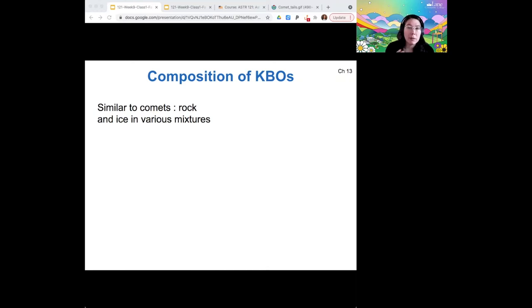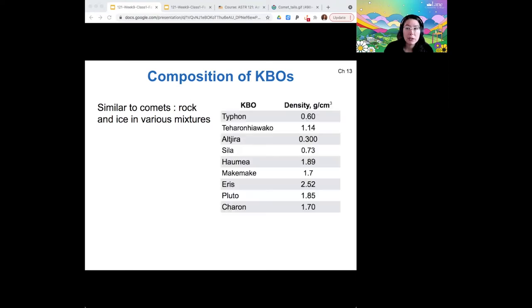So the KBOs consist of rock and ice in different mixtures. Here are a bunch of different densities of some famous Kuiper Belt objects. And as you can see, they're kind of all over the board. So there's quite a bit of variation there based on whether something is more rocky, like Eris, or more icy, such as Scylla here.